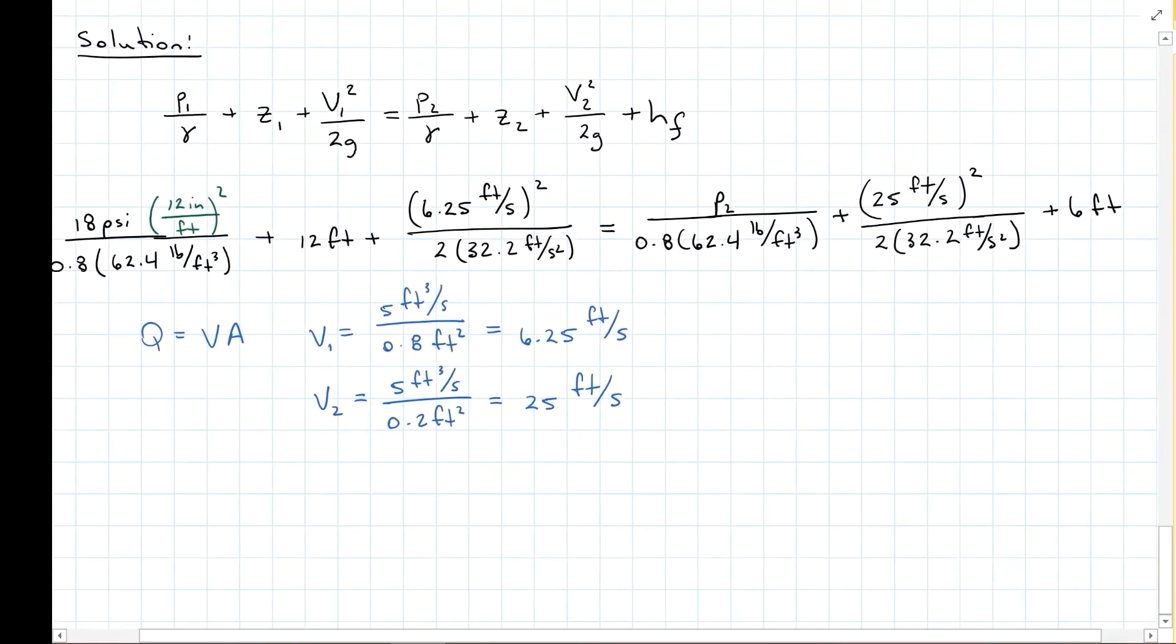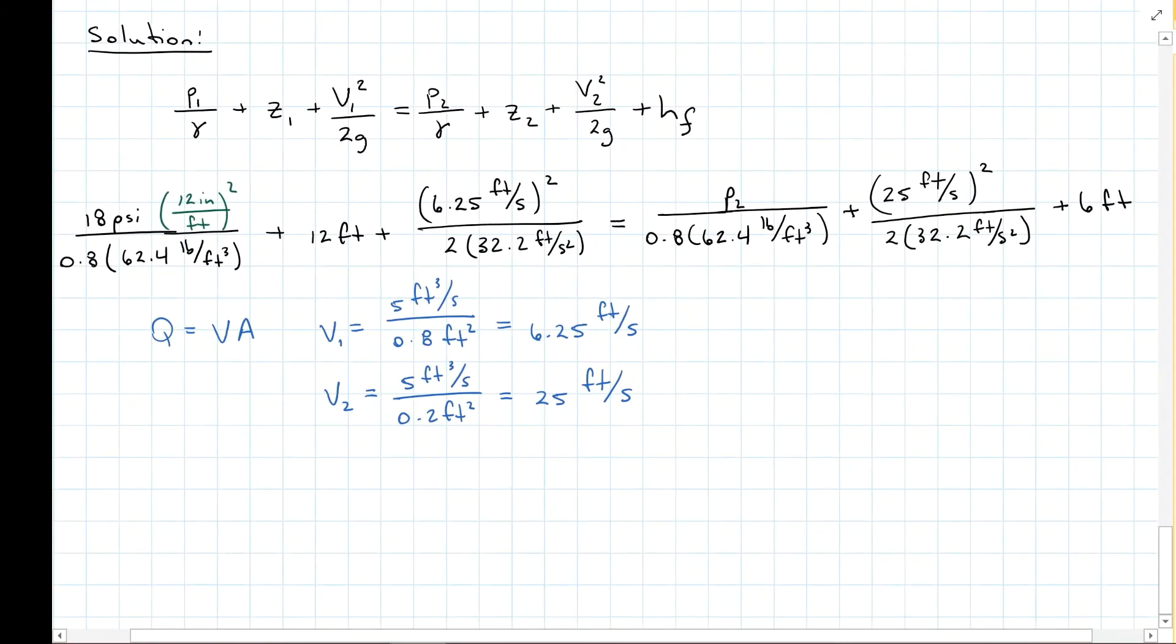And then we were given that head loss of 6 feet. So here's all of the inputs that we were given and solving for pressure 2. We get 2,440 pounds per square foot or 16.9 pounds per square inch.